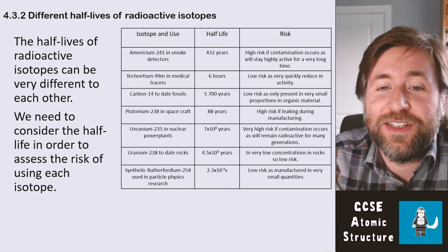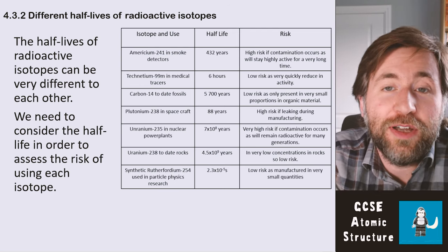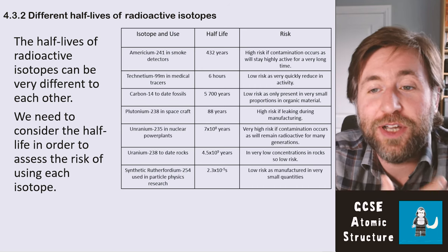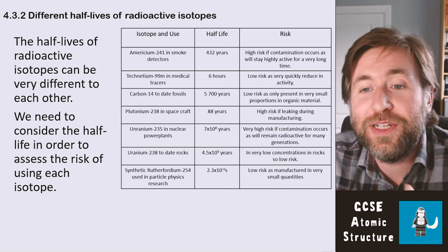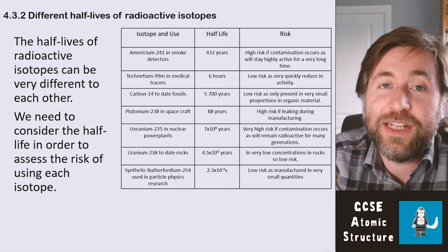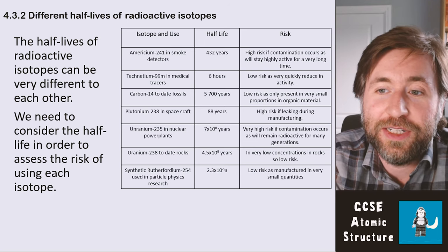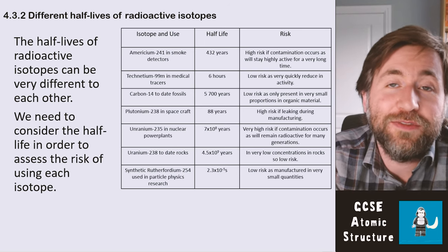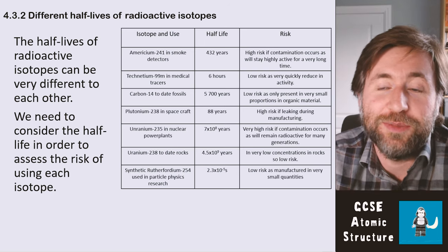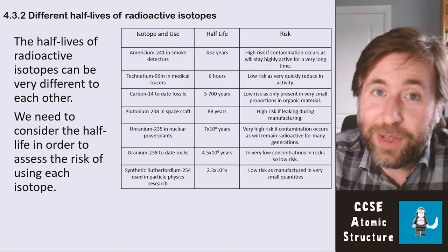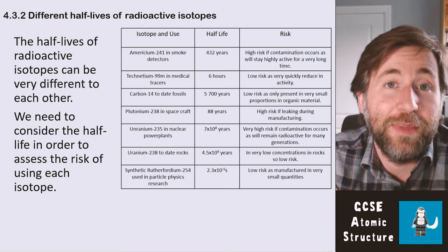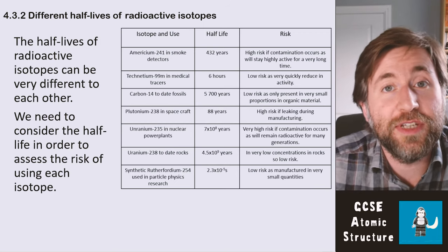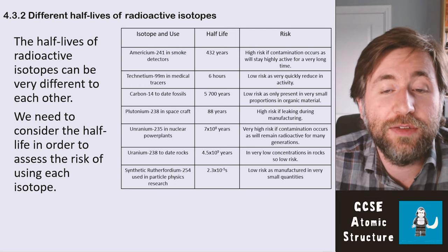Uranium-235 in nuclear power stations has a half-life of 7 × 10⁸ years — a really very long half-life. That is a very high risk of contamination if it leaks, because it will remain radioactive for a very long time, across many generations.